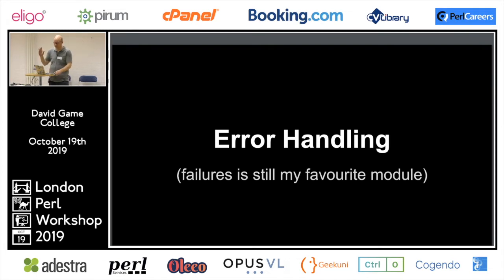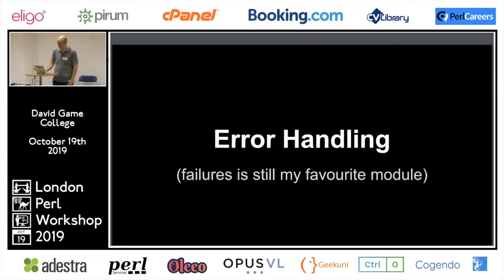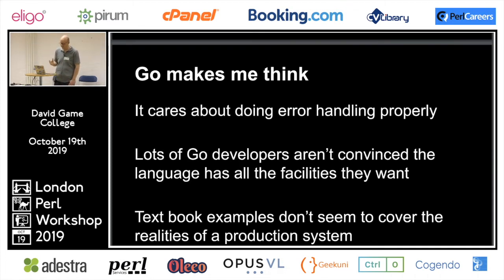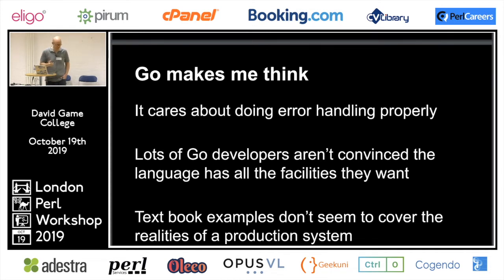This talk is about error handling. The idea ironically starts from not doing Perl — we've started doing Go as well as Perl. The Go error handling is something the designers of the language obviously care a lot about. A lot of the Go decisions are relatively C-based, which isn't too surprising given the creators' origins. They prefer returning errors rather than throwing exceptions.